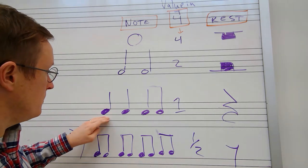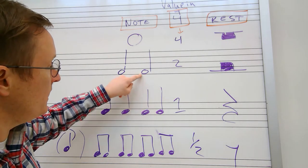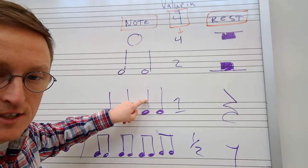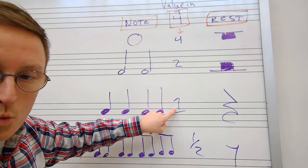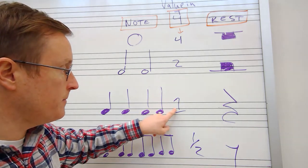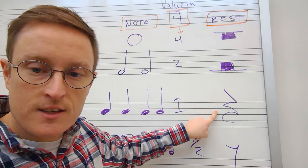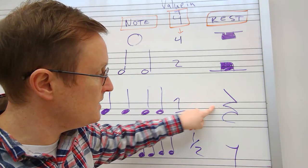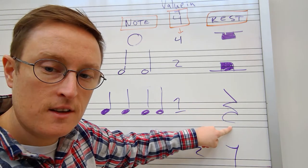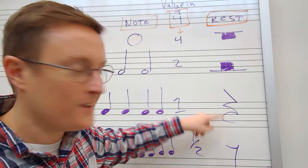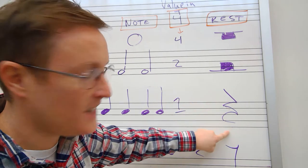Next we have quarter notes. Quarter notes color in the note head and have the stem still and they're worth one beat each in 4-4 time and this funky looking thing is a quarter rest. It's like a Z with a C on the end. If you want to practice doing that and get better, draw the Z and then the C at the end.